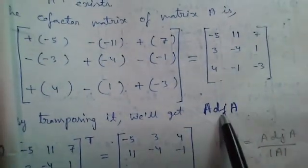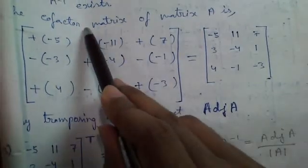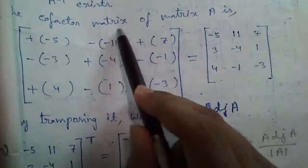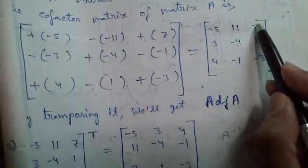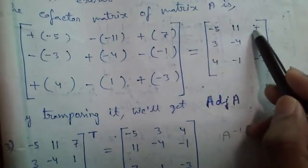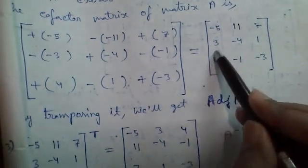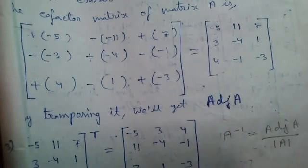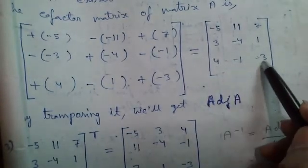We got our adjoint A matrix by transposing the cofactor matrix. Transposing means writing all the rows into the column wise: minus 5, 11, 7; 3 minus 4, 1; writing column wise 4 minus 1 minus 3.